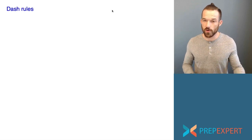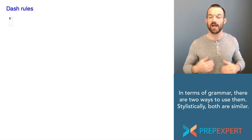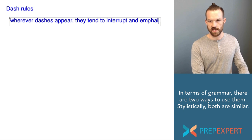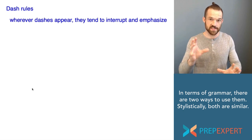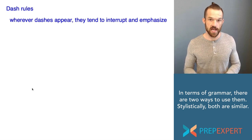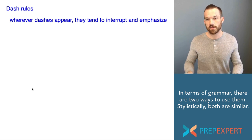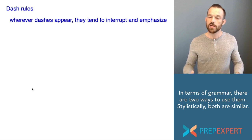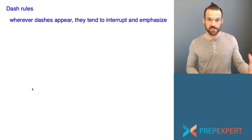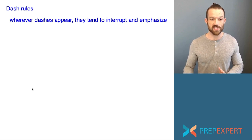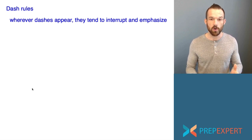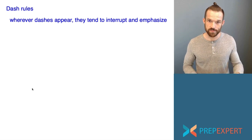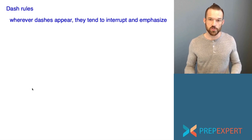The first thing to know about dashes is that although they can be used in two different ways, wherever you find a dash, they tend to interrupt and emphasize. So if you have information that you want to interrupt a sentence to add, or information that you want to emphasize, dashes can be a good way to do that. These are stylistic concerns. Stylistic concerns usually don't give rise to an answer being right or wrong on the SAT or ACT — the tests usually give you hard, fast grammar rules. But it's still worthwhile to know that dashes tend to interrupt and emphasize.